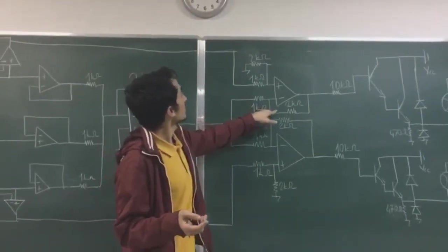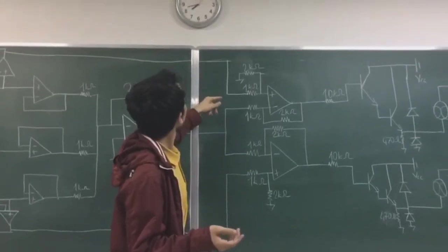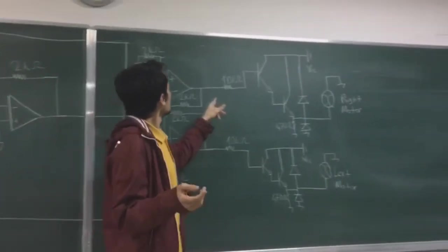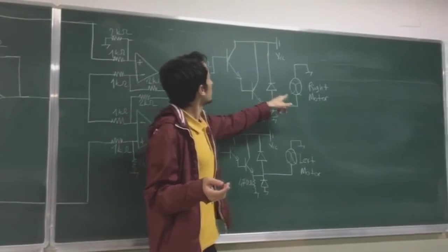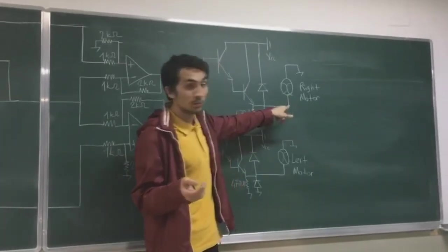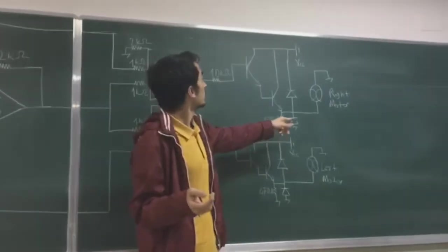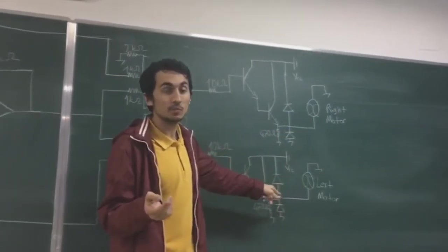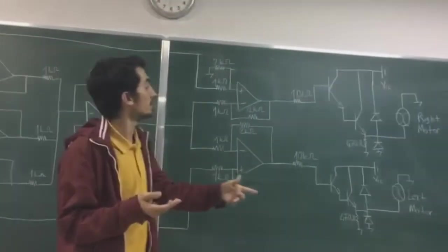This difference amplifier will give a greater voltage than this one. If this voltage is greater than this one, the voltage across the right motor will be greater than the left motor. Finally right motor will move faster than the left motor, so the car will turn left.